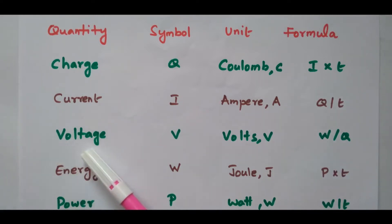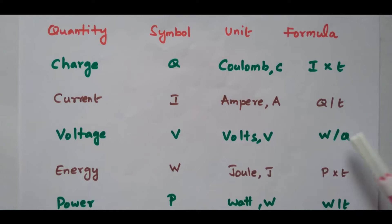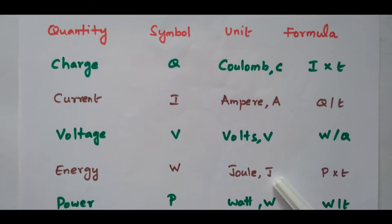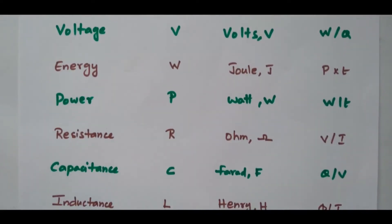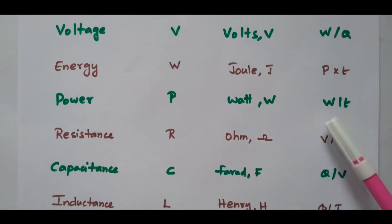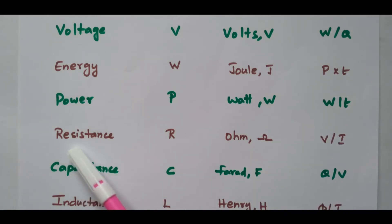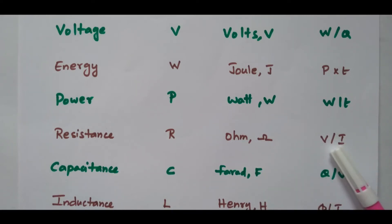Third, voltage: symbol is V, unit is volt written as V, and the formula is W by Q — work done by charge. Then energy: symbol is W, unit is joule written as J, and the formula is P into time. Then power: symbol is P, unit is watts written as W, and the formula is W by T.